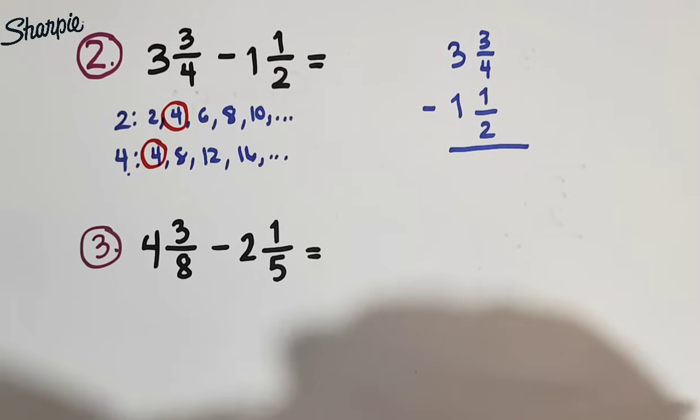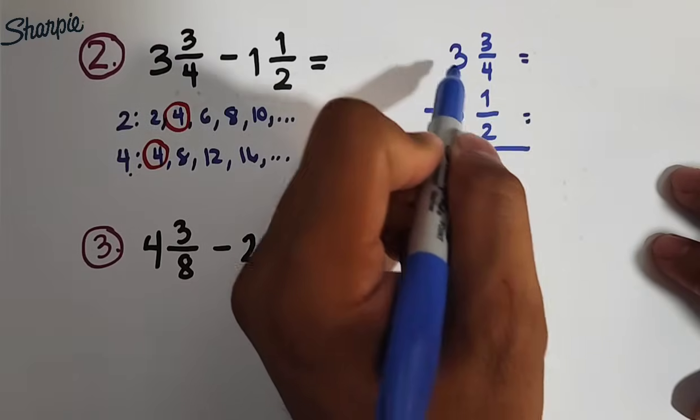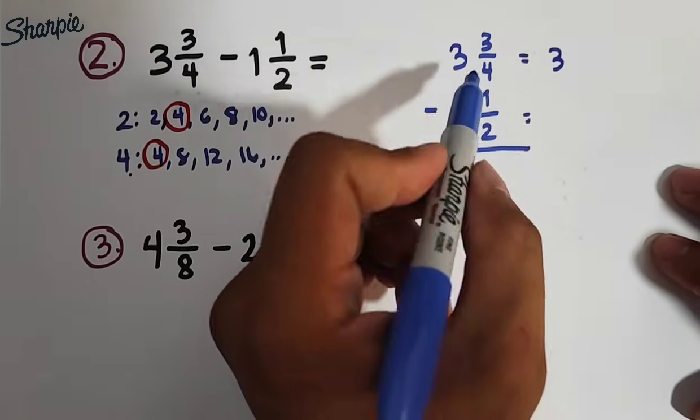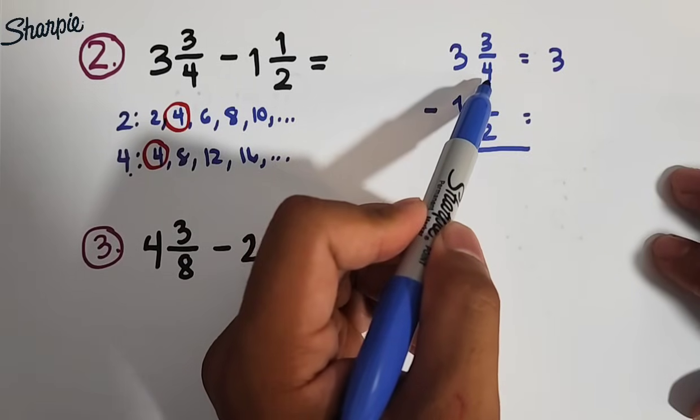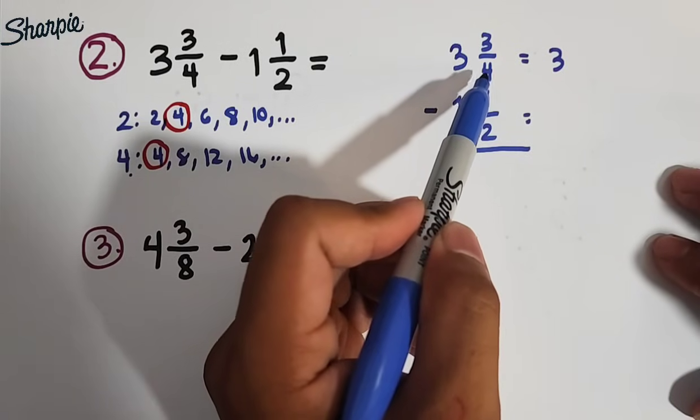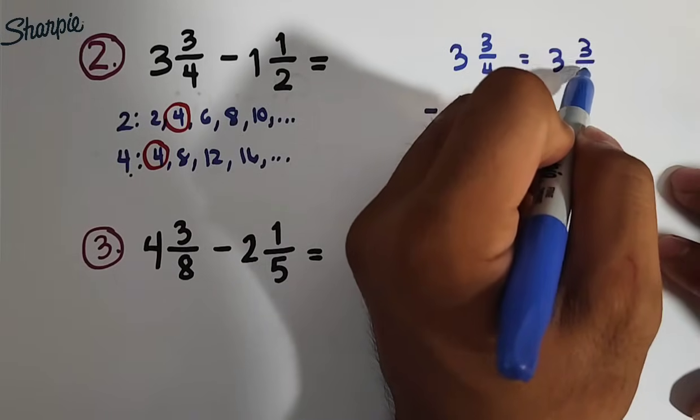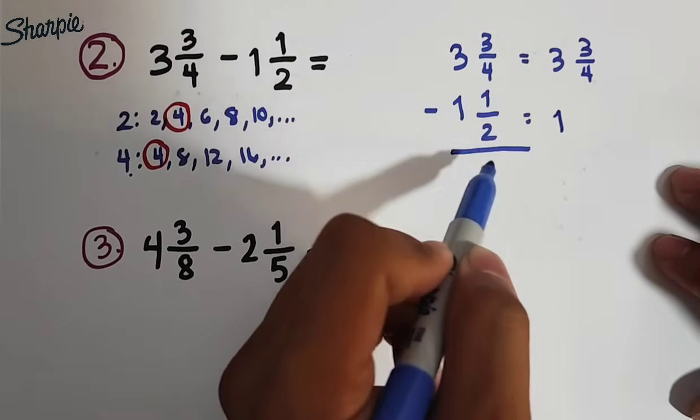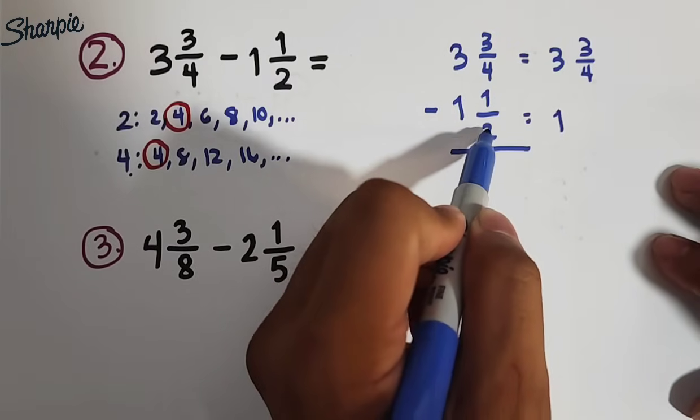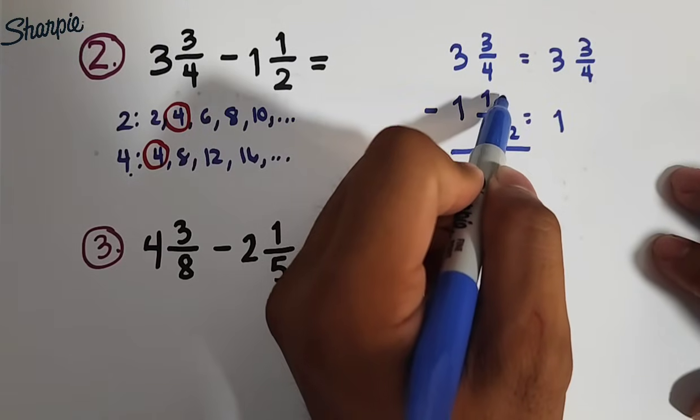Therefore, the LCD is equal to 4. So, we will transform this into equivalent mixed number, copy 3. And since this denominator is already 4, hindi na natin kailangan mag-multiply pa ng kahit anong number. We only need to copy 3 fourths. And then for this mixed number, copy 1. Then, this 2, you need to multiply it by 2 to make it 4, as well as your numerator.